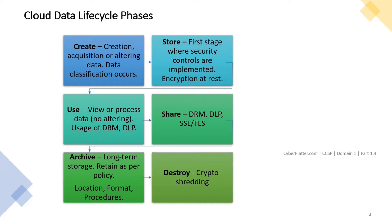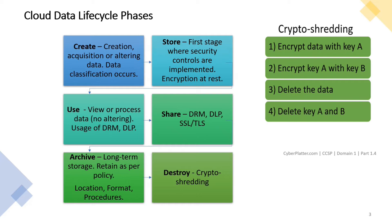Destroy is the last phase of the data lifecycle. Here data is permanently destroyed using physical or digital means. Crypto shredding, also known as cryptographic erasure, is the only feasible and thorough sanitization method in cloud. In crypto shredding, the data is encrypted with key A, then key A is encrypted with key B. The data is then deleted, and both keys are deleted. Remember, crypto shredding requires two crypto systems: one to encrypt the target data, and the other to encrypt the first encryption key — that is key A.